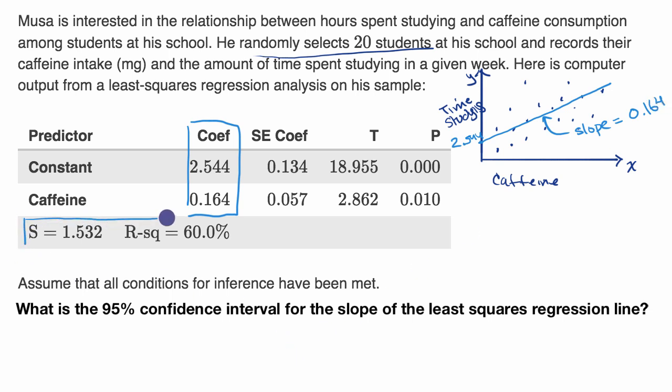Now this information right over here tells us how well our least squares regression line fits the data. R squared says how much of the variance in the y variable is explainable by the x variable. If it was one or 100%, that means all of it could be explained, and it's a very good fit. If it was zero, that means none of it can be explained. It would be a very bad fit. Capital S, this is the standard deviation of the residuals, and it's another measure of how much these data points vary from this regression line.